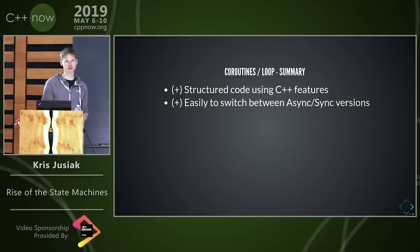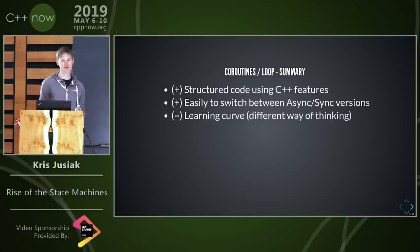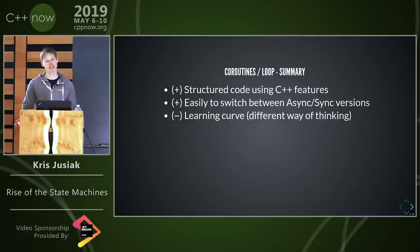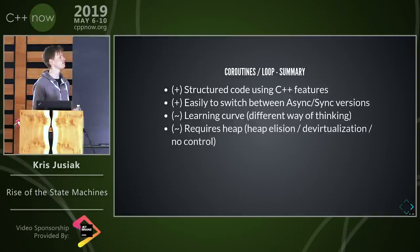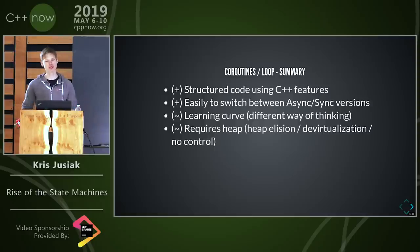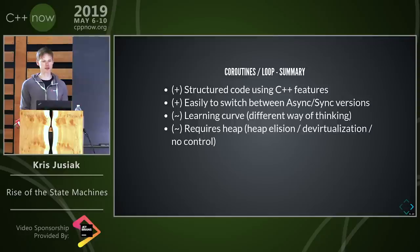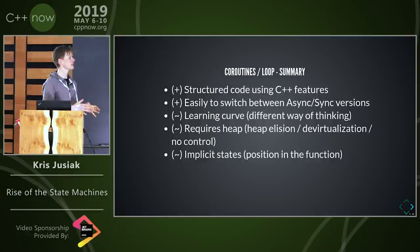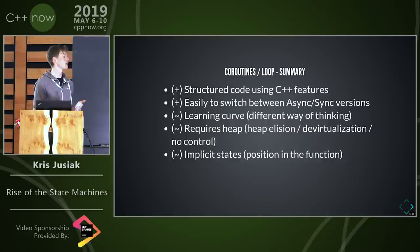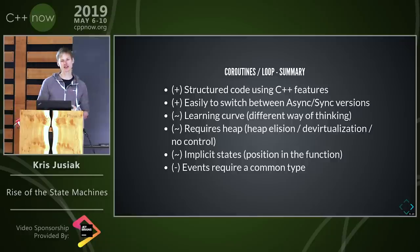There's a learning curve — it's not easy to think about coroutines like procedural or object-oriented code. It will most likely require heap allocation at some point, so I wouldn't use them in, say, high-frequency trading because you can't always control that. We also have implicit states — the state is the position in the function — which is a bit different from having an explicit state.